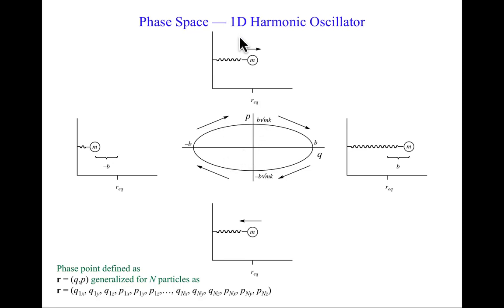Phase space for this one-dimensional case has two dimensions that I can graph: a spatial dimension Q and a momentum dimension P. A point in phase space is defined by the two coordinates Q and P. I could certainly generalize that for n particles in three dimensions of space: position for particle one in the x, y, z direction and momentum in the x, y, z direction, with six coordinates for particle two and so on. But I can't graph that very well, so I'm restricting myself to the one-dimensional harmonic oscillator.